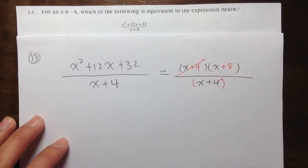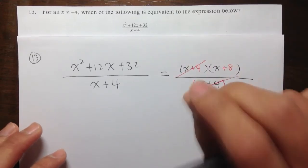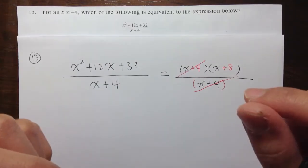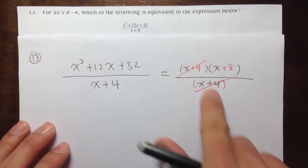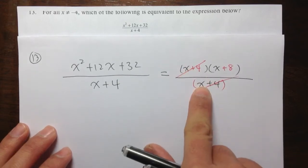So, cancel, cancel. We can only cancel factors, or you can think about parentheses. Do not reduce the 4 and the 32 right away. We can only cancel the factors if the two parentheses are exactly the same.